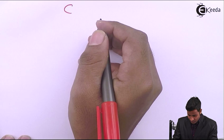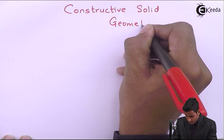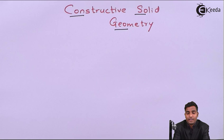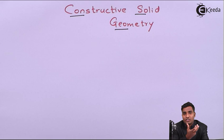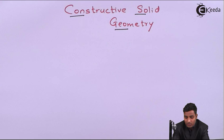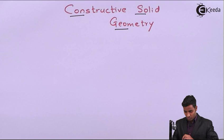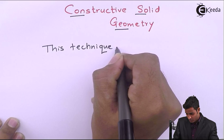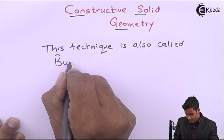Hello friends. In this video we will study constructive solid geometry. To eliminate all kinds of ambiguities in representation and manipulation of objects, solid modelling was developed. Constructive solid geometry is one type of solid modelling. This technique is also called the building block approach.